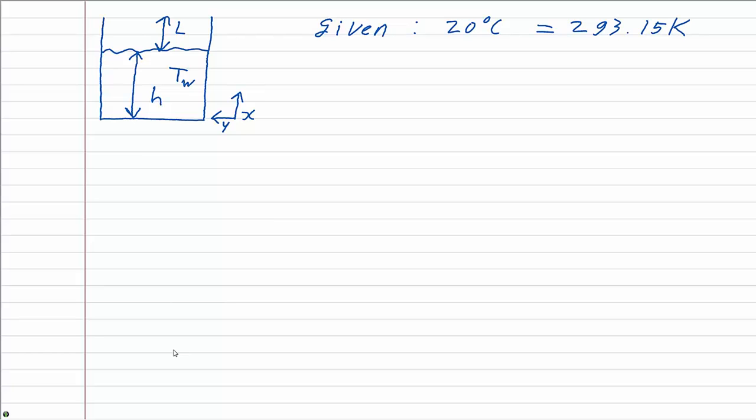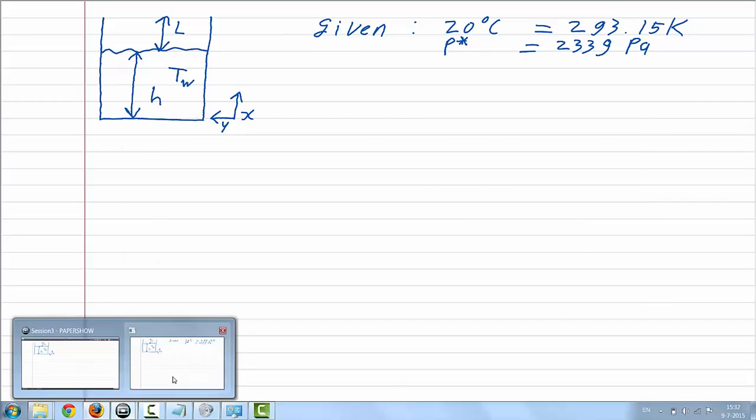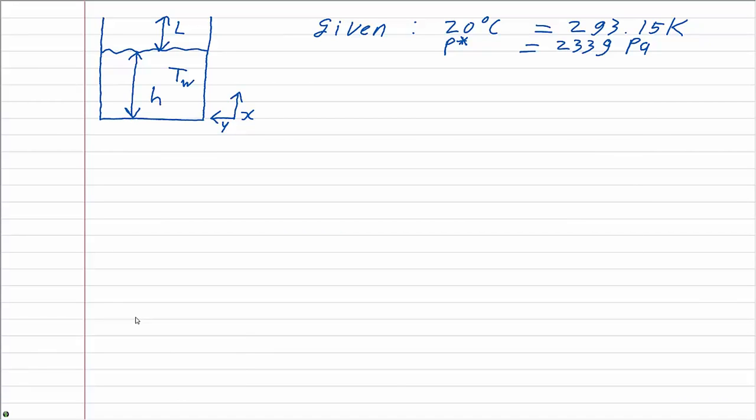The first task is to look up the vapor pressure of water. If you look it up on Wikipedia, the value is 2339 Pascal. On the other hand, if you look it up in the datasheet most commonly referred to in the field of transport phenomena, you will obtain a water vapor pressure of 2337 Pascal, which is just 2 Pascal difference, not too far off.